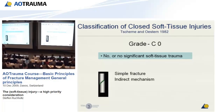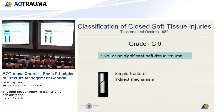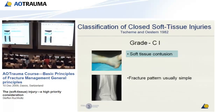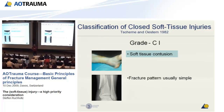There is a nice classification, published by Tscherne and Oestern about 20 to 30 years ago. If you don't have any significant visual soft tissue trauma, that's C0. C1 is a common situation where you see some contusion and hematoma but nothing serious — typically from an indirect injury like a skiing accident where the foot is in the ski and the body rotates, producing a simple spiral fracture.